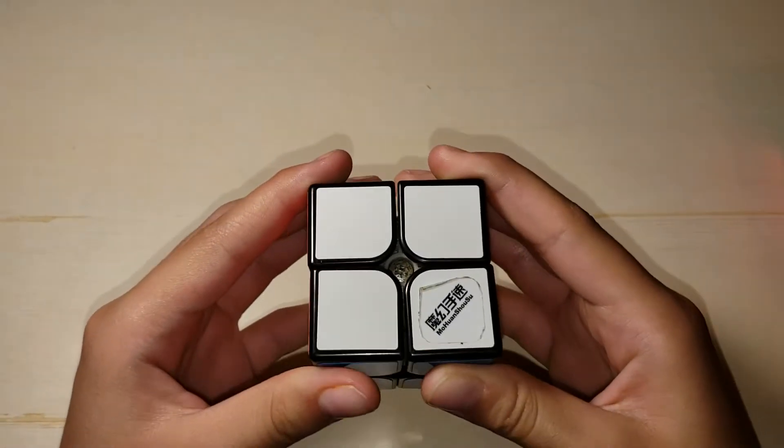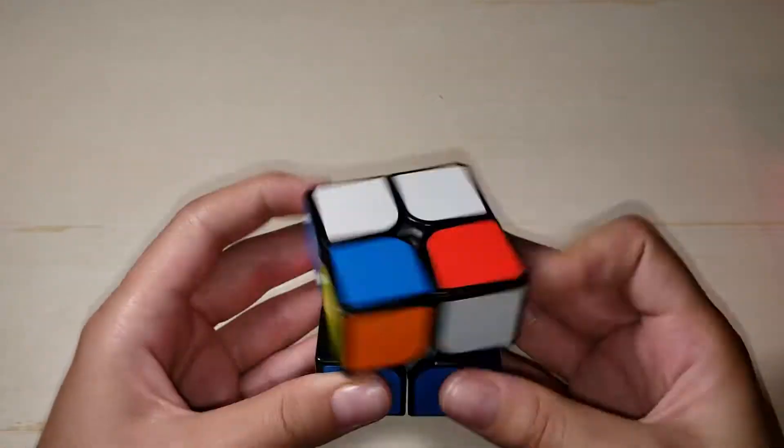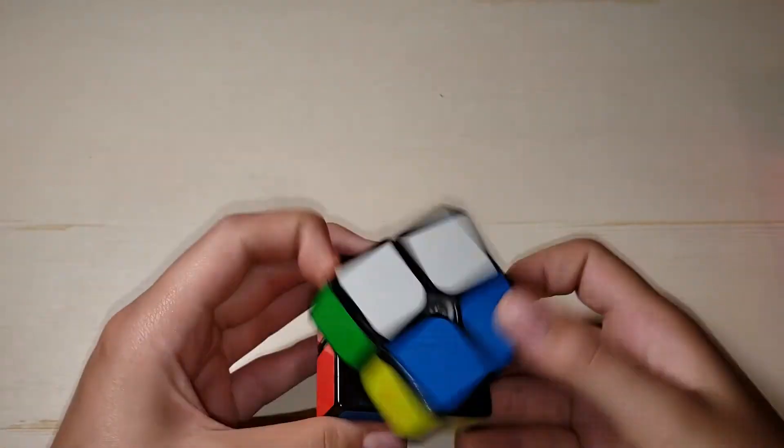Alright, so for 2x2 I'll be using the Mohan Shoshu Chi one. I've been using this for the past year, and because it's just really good, really solid, and it works with my turning style.